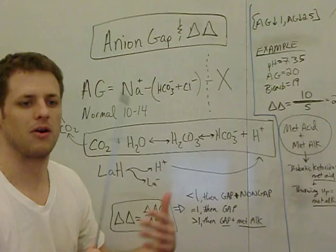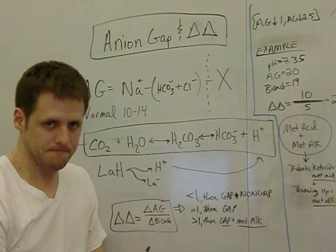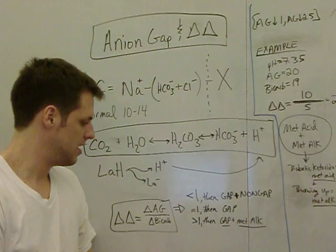And so the example would be you have diarrhea, and you're getting rid of a lot of bicarb that way. You now have two different things contributing to this decrease in bicarb. So if it's less than 1, you have a gap and a non-gap acidosis.